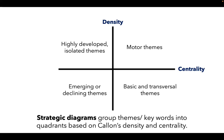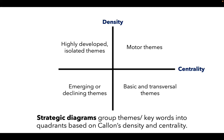On the right upper quadrant side, which has high centrality and high density, these themes would be called motor themes, since they're both well developed and also important in structuring the research field. They also show that the concepts have strong external links and are conceptually closely related.